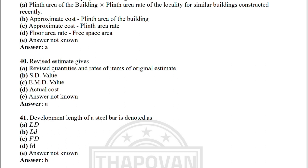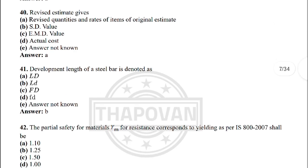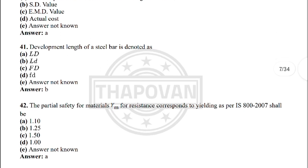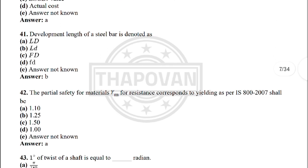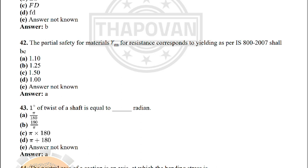Next: revised estimate gives — option A: revised quantities under the wasted rate of item of original estimate. Next: development length of the steel bar is denoted as — the correct answer is option B: Ld.